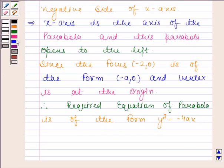Now here, a is equal to 2. So by putting a as 2 in this equation, we get y² = -8x.